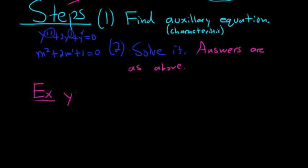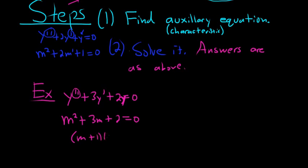Say we had y double prime plus 3y prime plus 2y equals 0. So in this case, this is the second derivative, so this would be m squared plus 3m plus 2. This should factor: m plus 1, m plus 2, equals 0. So you get two answers: m equals negative 1, m equals negative 2.